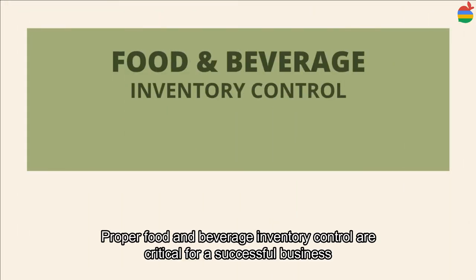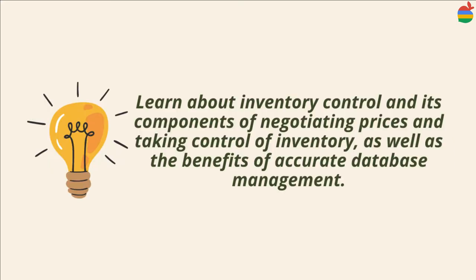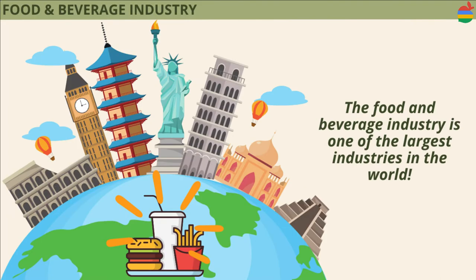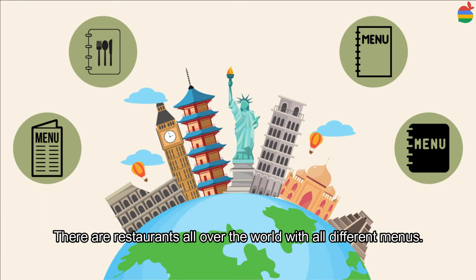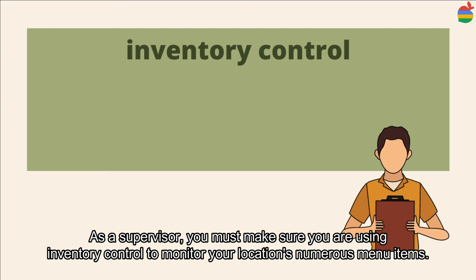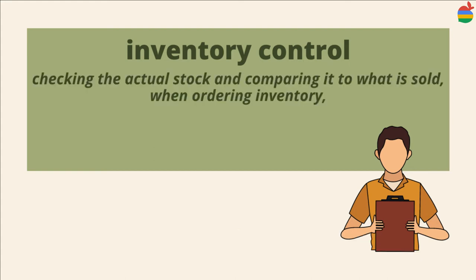Proper food and beverage inventory control is critical for a successful business. In this video we will learn about inventory control and its components — negotiating prices, taking control of inventory, and the benefit of accurate database management. The food and beverage industry is one of the largest industries in the world. As a supervisor, you must make sure you are using inventory control to monitor your location's numerous menu items.